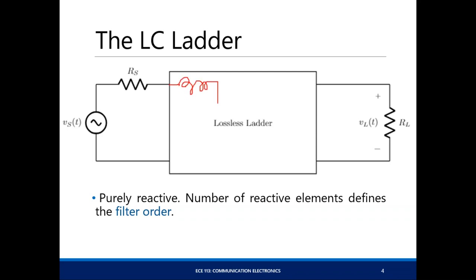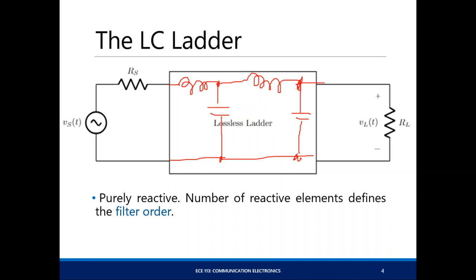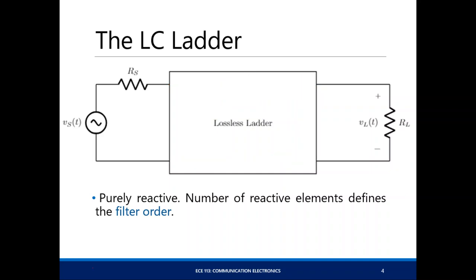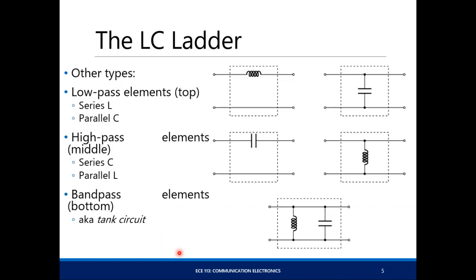So let's say here's your inductor, capacitor, then another inductor, and then another capacitor. In this case, you have a fourth-order low-pass filter. The assumption here is that the ladder is lossless, which makes all the elements purely reactive. And the number of reactive elements inside is the filter order.